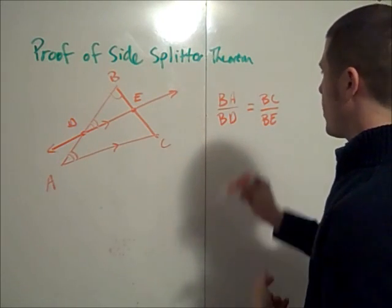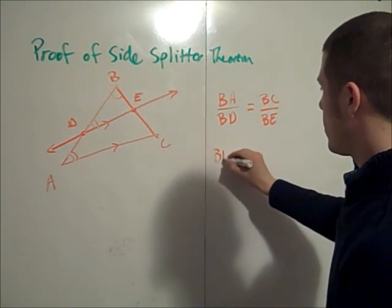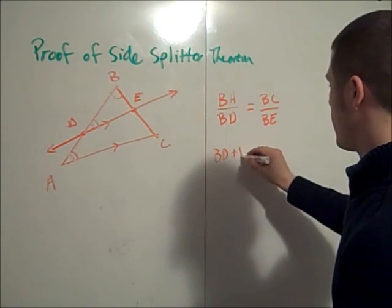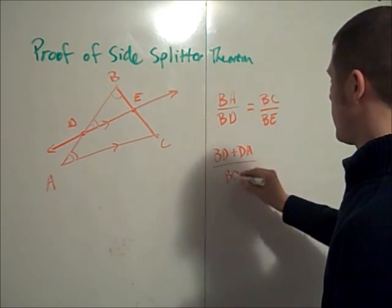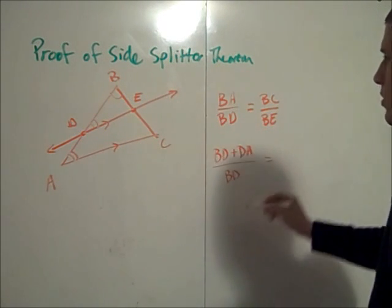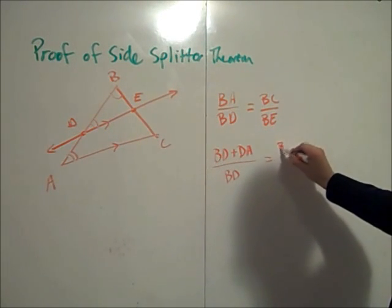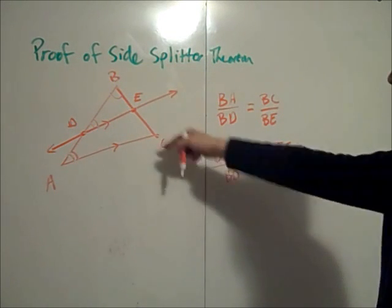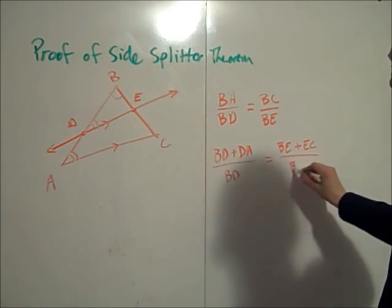So this proportion becomes BD plus DA over BD is equal to BE plus EC over BE.